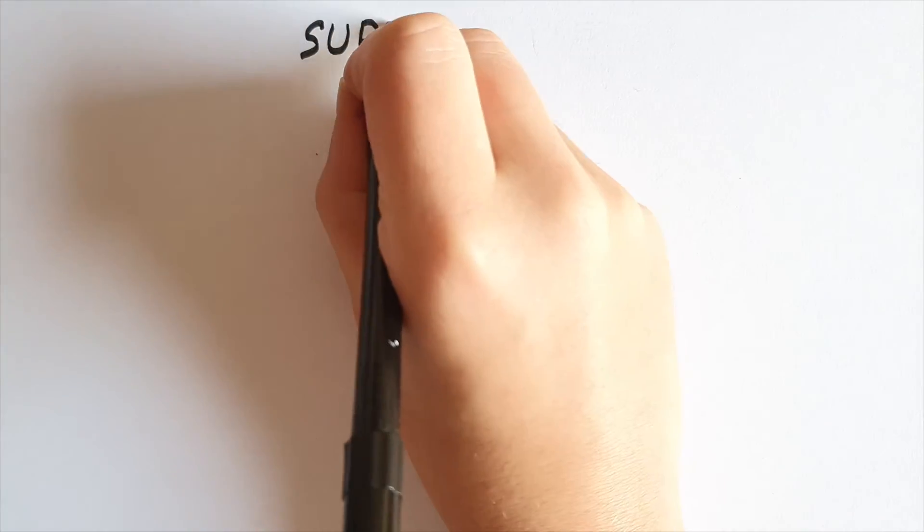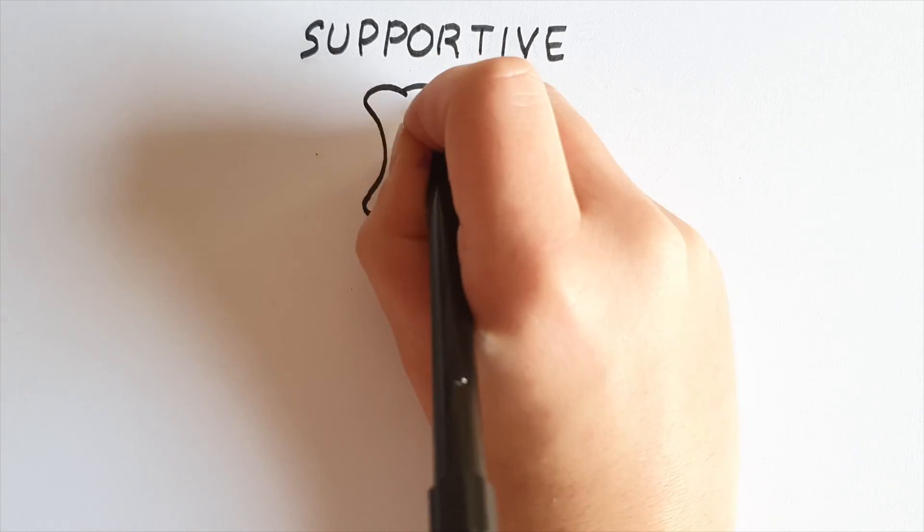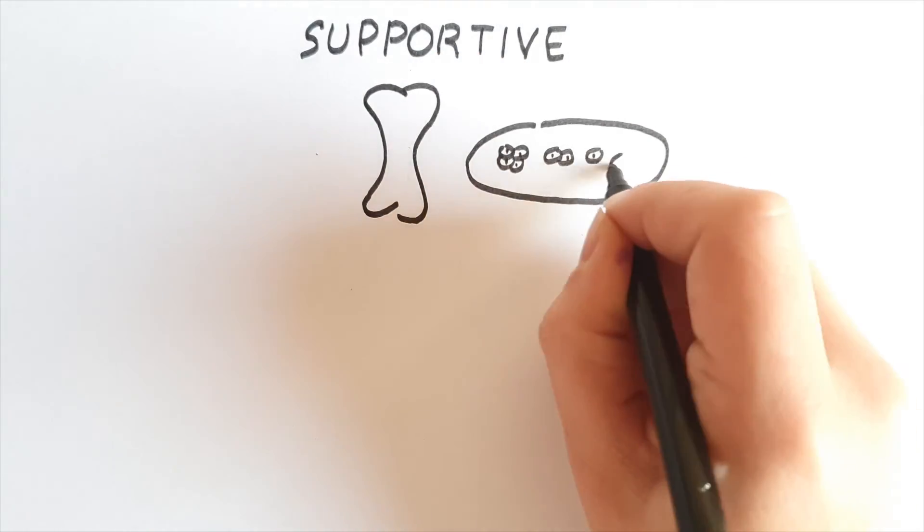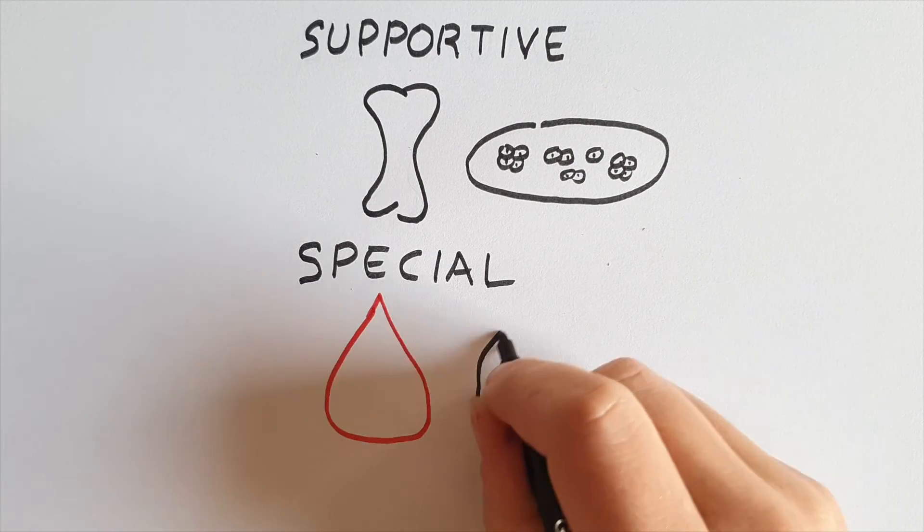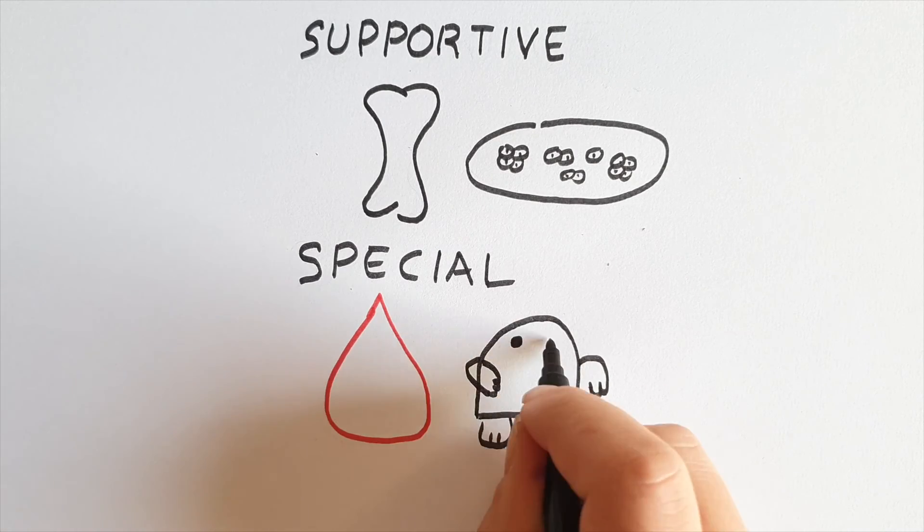For what concerns supportive connective tissue, we have cartilage and bones. While special connective tissue forms blood, bones, and cartilage, and it will be explored in a subsequent video.